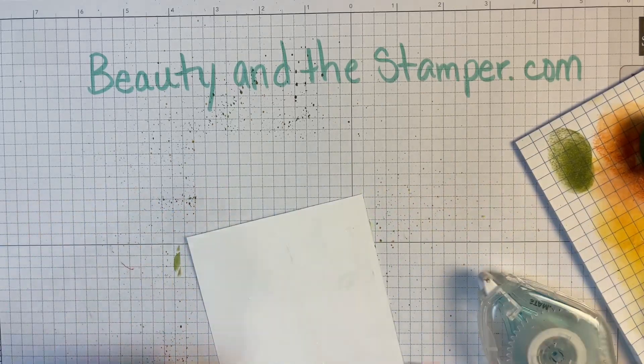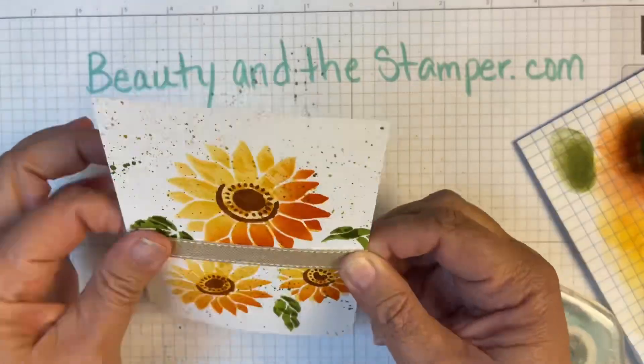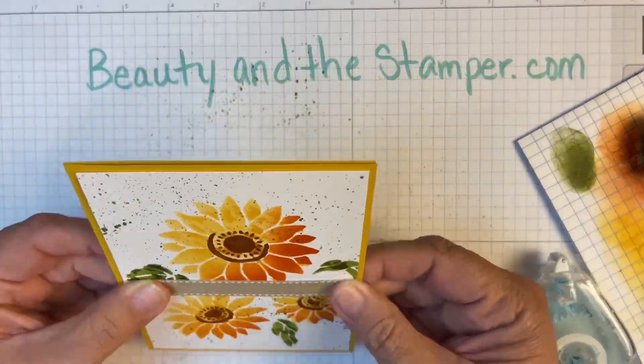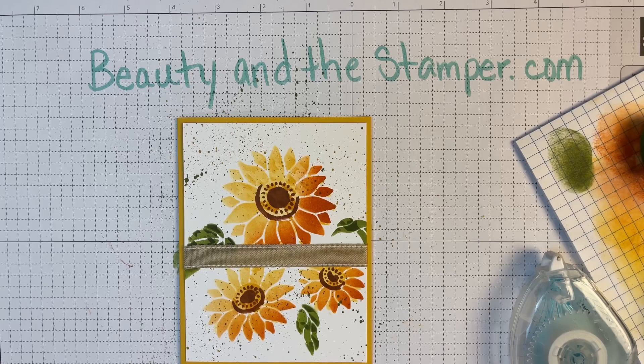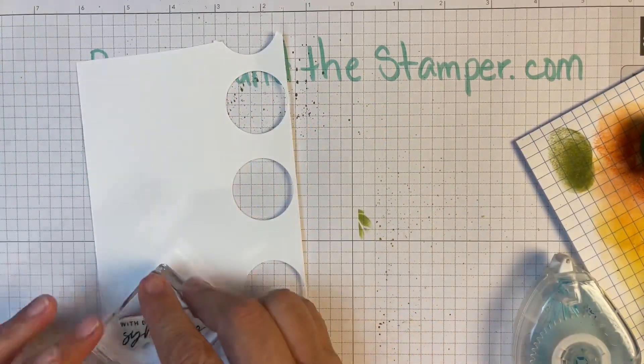I'm going to use my adhesive and wrap the ribbon right around—that saves on ribbon. Then I can put that right onto the crushed curry piece. Then I'm going to stamp this. Sadly, this is a sympathy card.